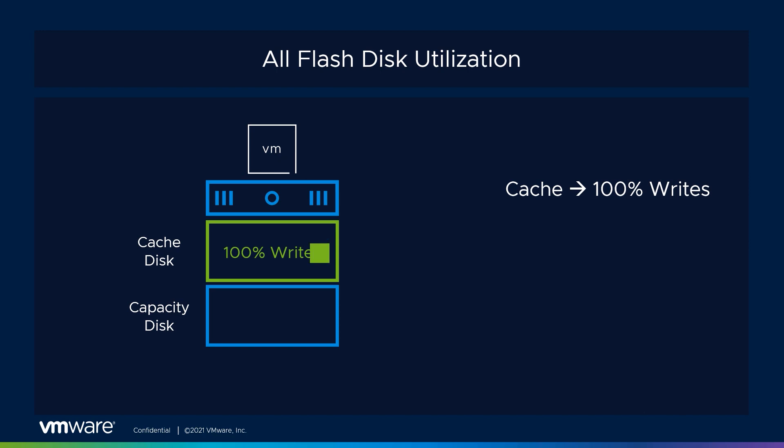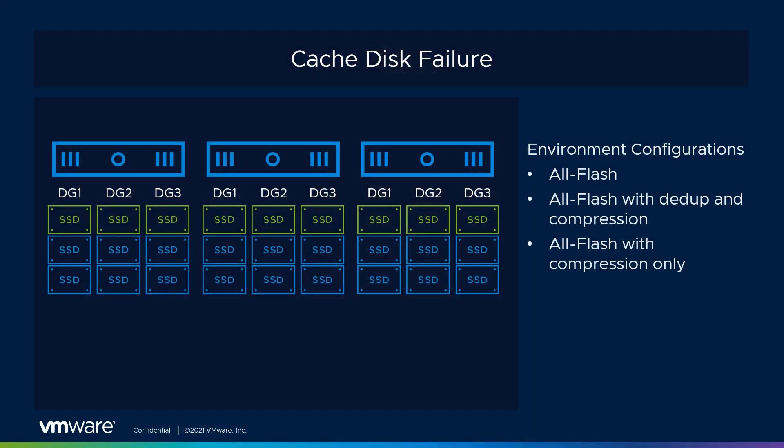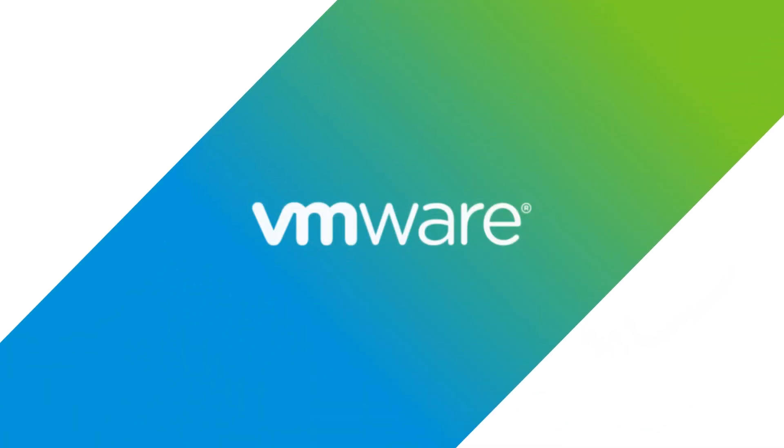Wrapping up this video: we started off by talking about our disk groups, how vSAN supports a maximum of five disk groups per each vSAN node, and how we allocate cache disks and capacity disks into those disk groups. We then dove further into the cache and capacity tiers, how we use them for reads and writes depending on hybrid or all-flash model. We finished off by talking about failure scenarios — what happens in a cache disk or capacity disk failure. I hope you found this video informative. Thank you for watching.